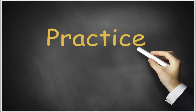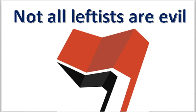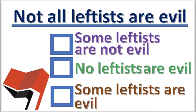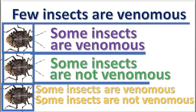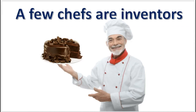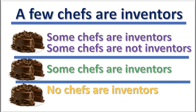Let's work some practice problems. For the first problem, 'not all' means 'some are not.' For the next problem, 'few' means some are and some are not. For the third problem, this is the correct translation.